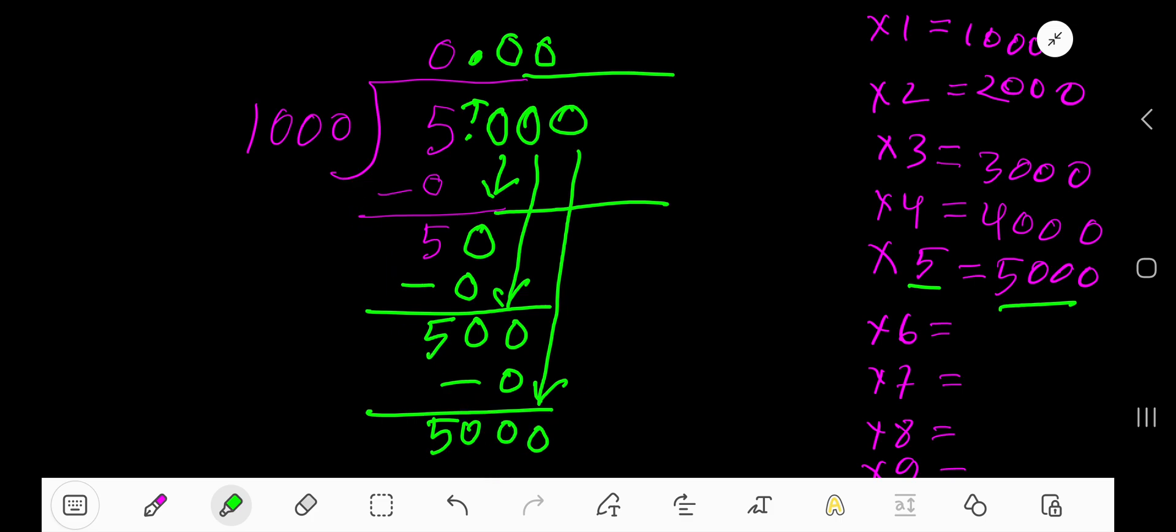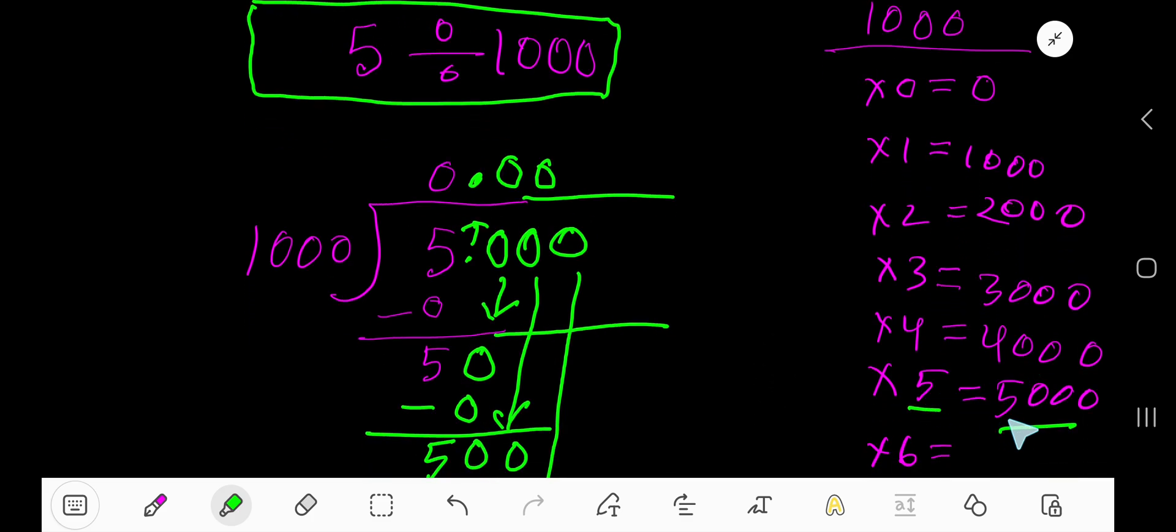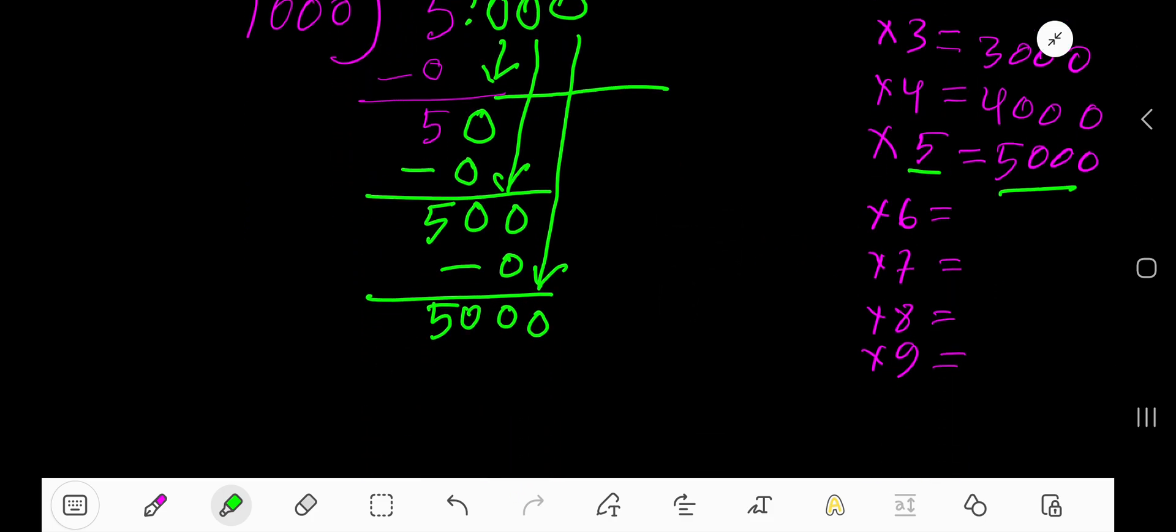1,000 goes into 5,000 how many times? Here is the multiplication table of 1,000: 1,000 times 0 equals 0, 1,000 times 1 equals 1,000, 1,000 plus 1,000 equals 2,000. If you continue this process, 1,000 goes into 5,000 five times.